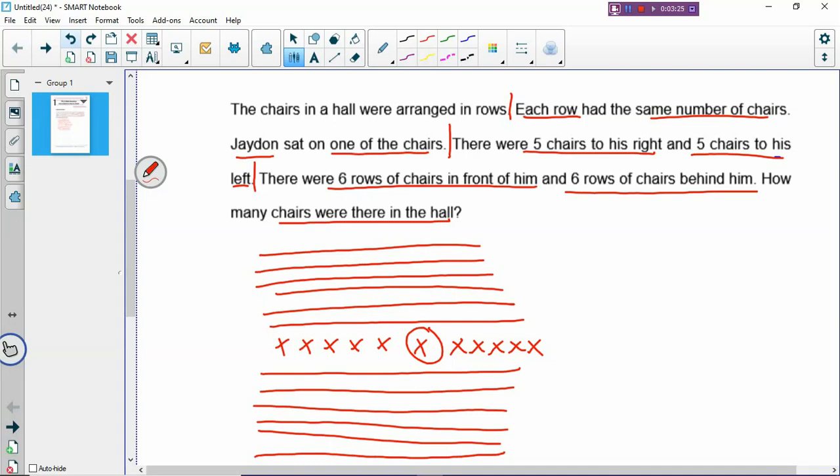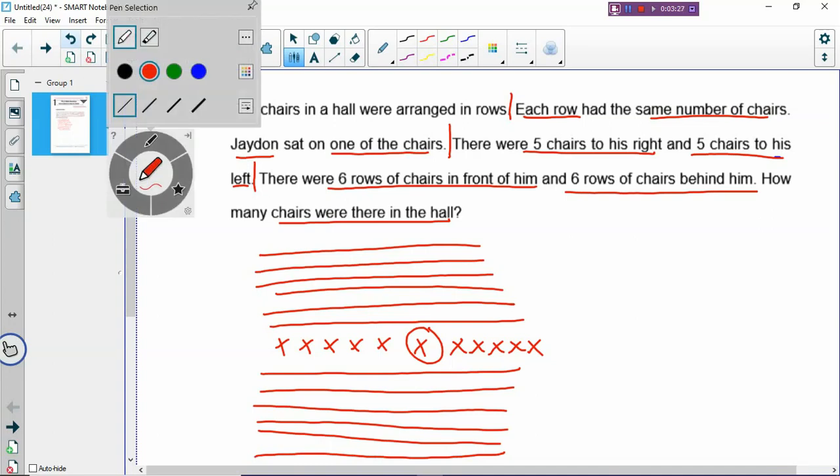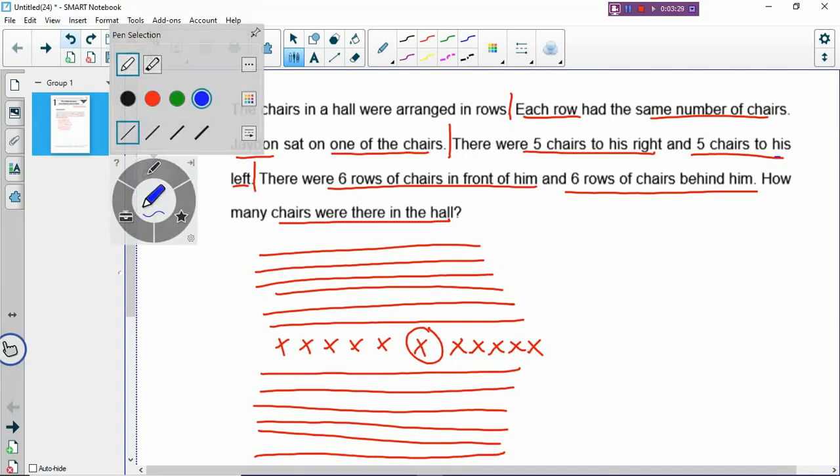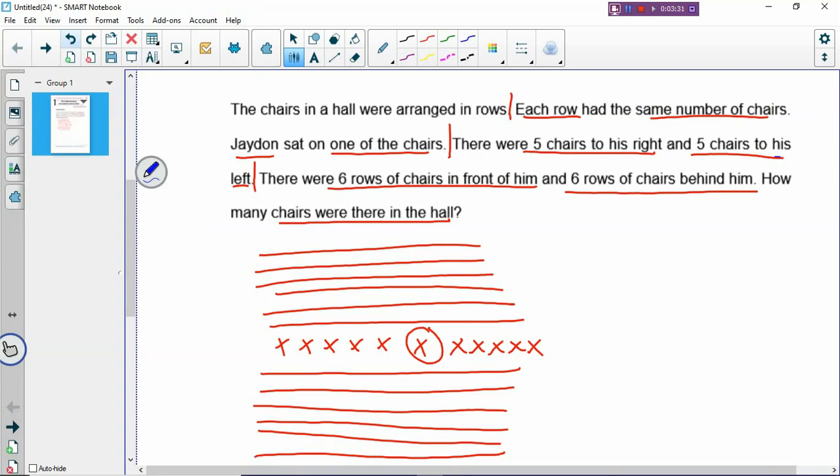So how many chairs were there altogether? Then you can count the chairs in one row. So how many chairs are there in one row? You look carefully: 1, 2, 3, 4, 5, 6, 7, 8, 9, 10, 11. So there are 11 chairs in one row.